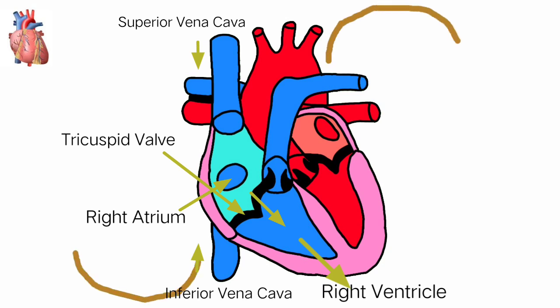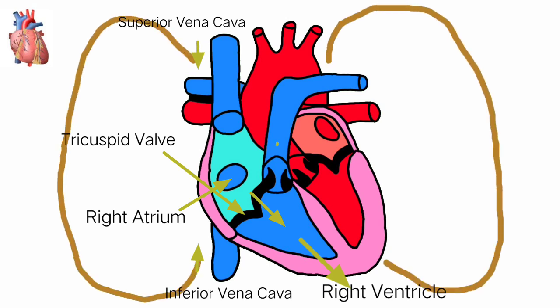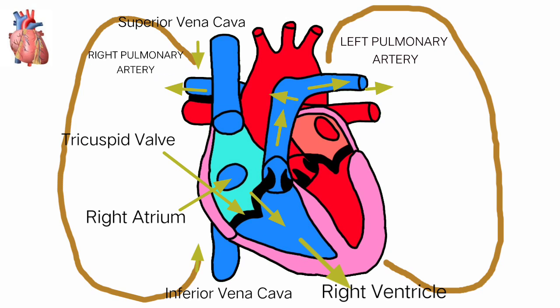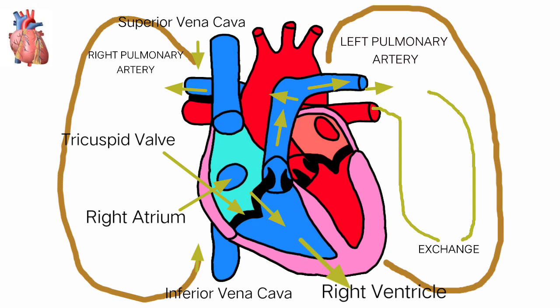After the tricuspid valve, the blood flows down into the right ventricle, and then it flows into the left and right pulmonary artery. The blood enters the lungs where gas exchange happens — carbon dioxide is carried out from the body, while the inhaled oxygen is carried back to the heart.